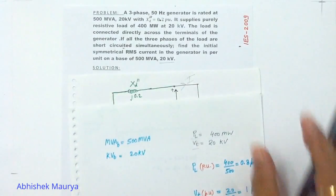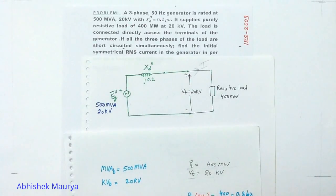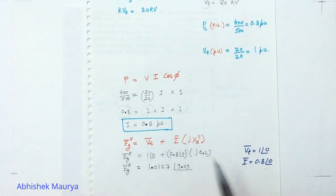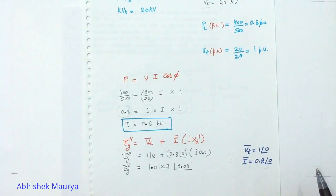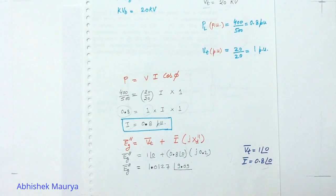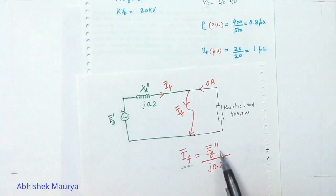Step 2: Calculate the sub-transient internal voltage. Apply KVL in the loop using the values of Vt and Xd double-dash. Assuming terminal voltage as reference: 1 angle 0°. Since the load is resistive, the current in phasor form is 0.8 angle 0°. Substituting these values, the sub-transient internal voltage Eg double-dash comes out to be 1.0127 angle 9.09 degrees.